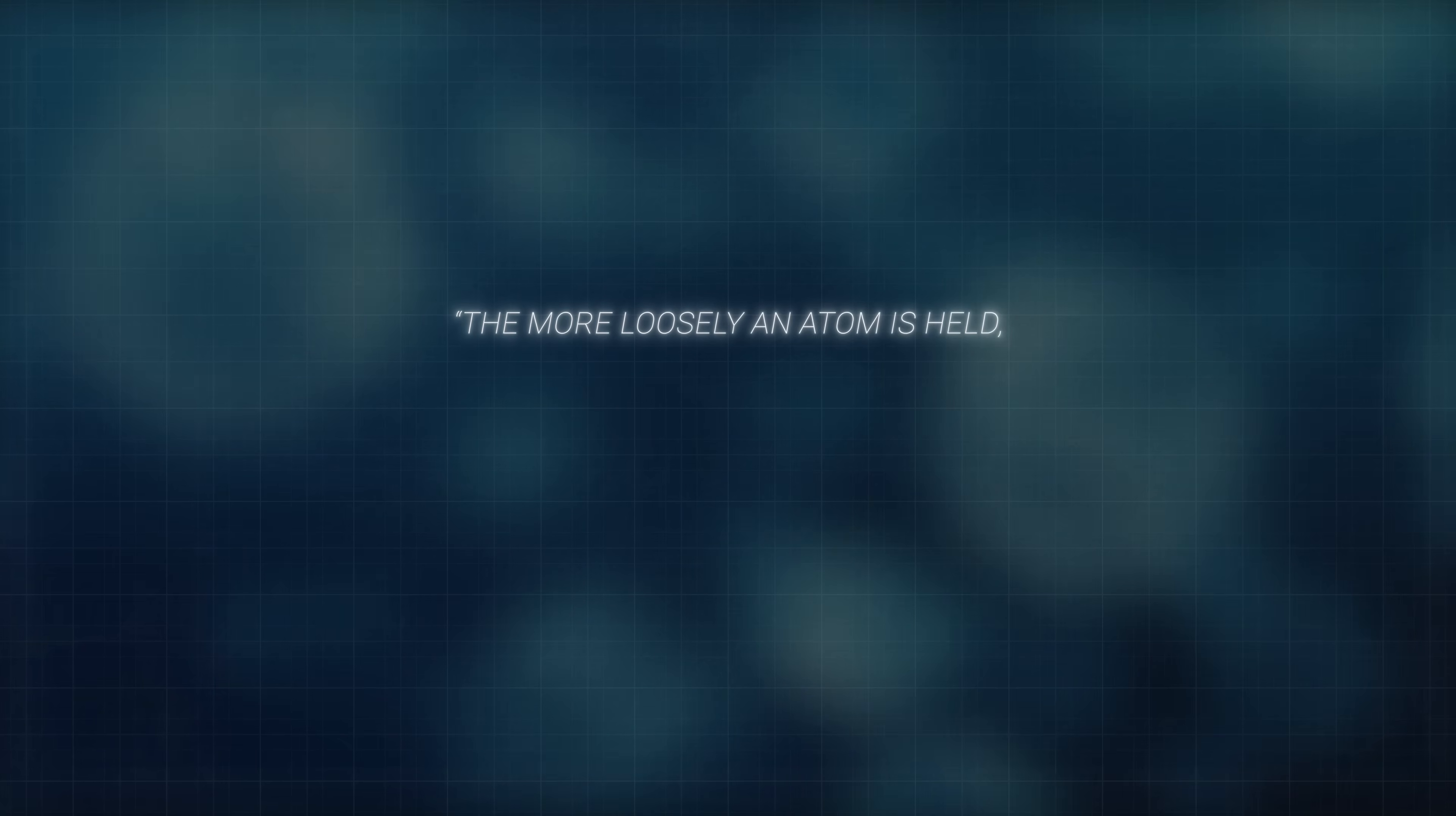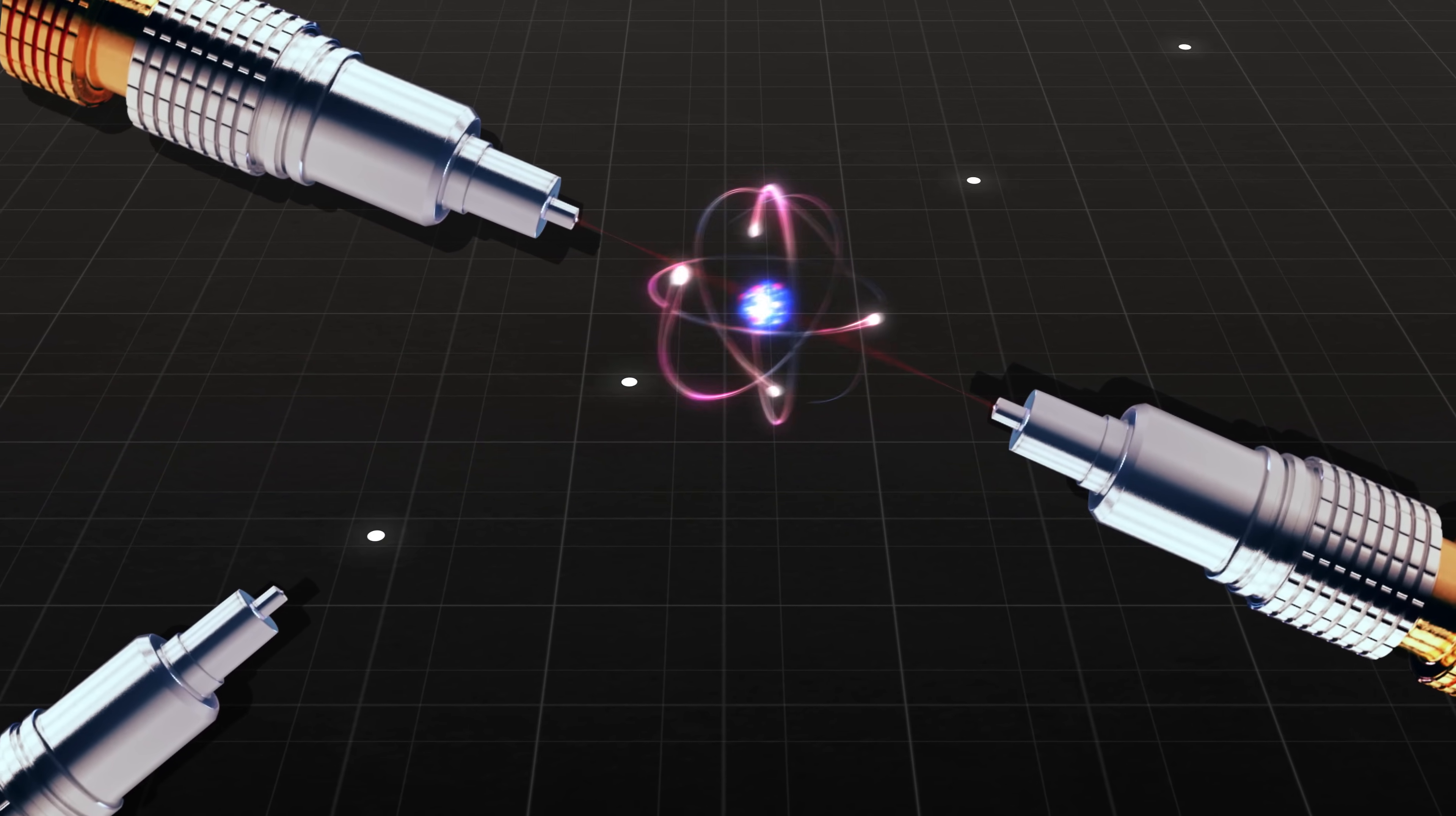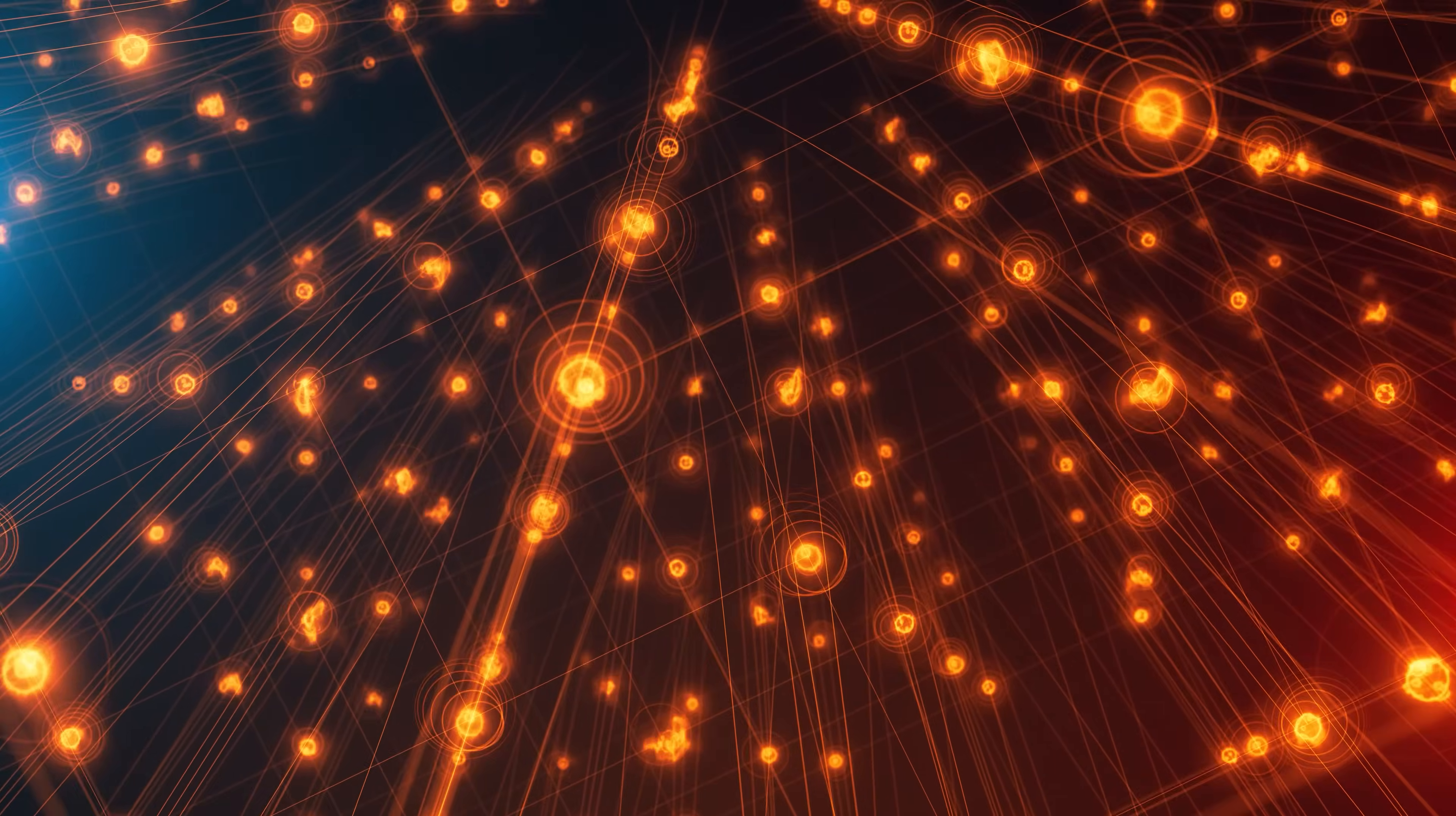As the scientists explain, the more loosely an atom is held, the fuzzier or more spatially extensive it appears. The fuzzier the atom, the more easily it rustles and records the path of the photon. In practical terms, increasing the atom's fuzziness made it more likely the photon would behave like a particle, since the atom was more likely to reveal the path. Reducing the fuzziness by holding the atom more tightly made it more likely that the photon would behave like a wave, since neither atom could reveal it had been struck.